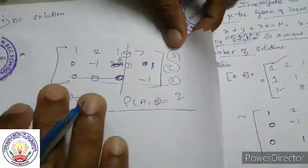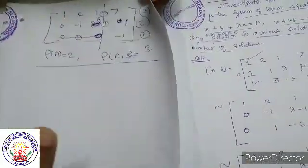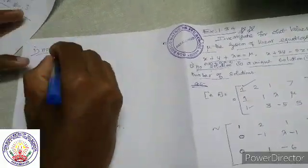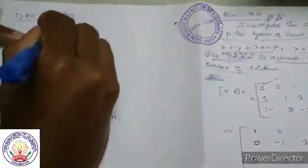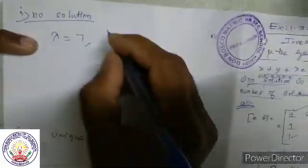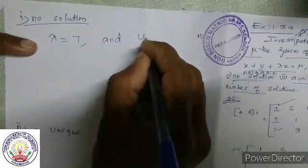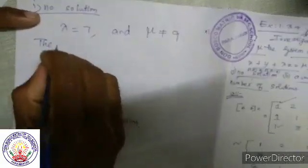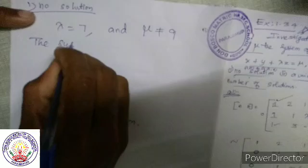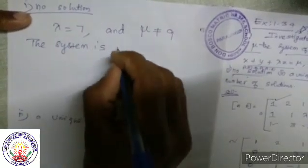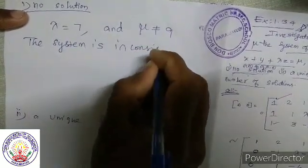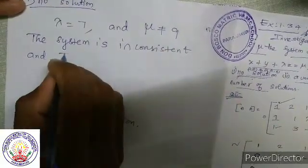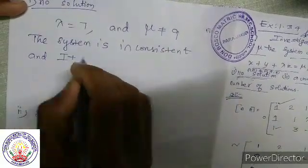Lambda is equal to 7 and mu is not equal to 9. The system is inconsistent and it has no solution.